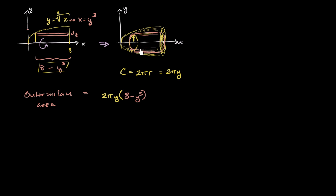8 minus y³ is just this length. Multiply that by the circumference and you get the outer surface area. The volume of one shell is the outer surface area — 2πy times (8 minus y³) — times the depth dy.